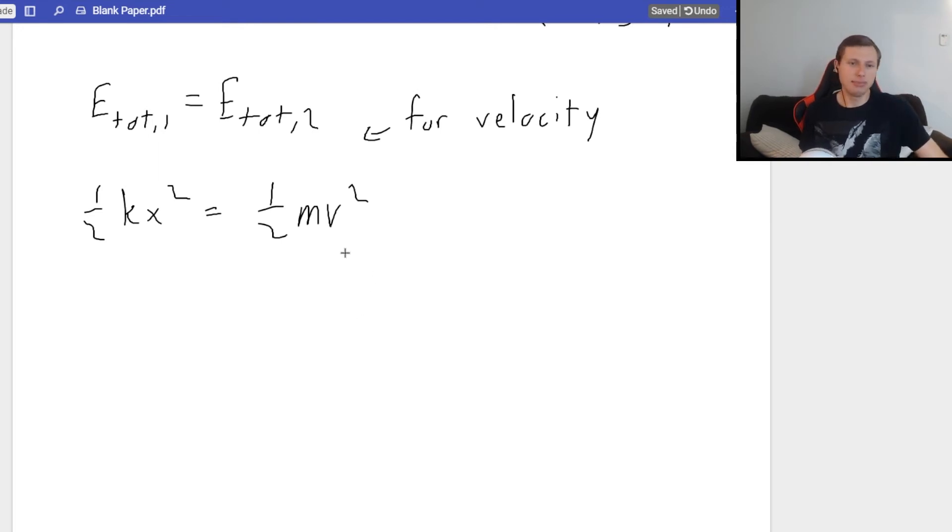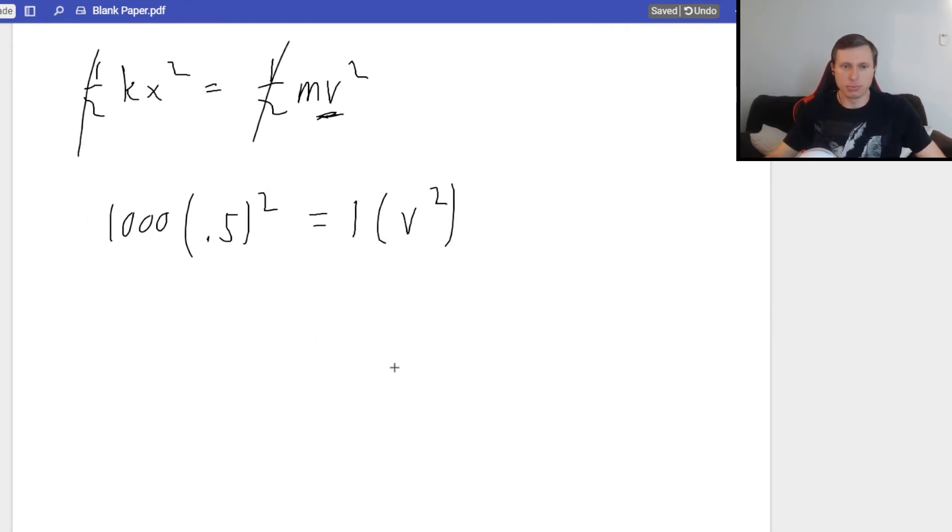So one half KX squared equals one half MV squared. In other words, all the energy at point two is kinetic. So now we need to solve for velocity. And notice here the one halves cancel out, which is nice. And I can just plug in now. So K was 1,000 newtons per meter. K is 1,000. X, we said was 0.5. We need to square that. And that equals mass, which was 1, times velocity squared. So if we plug this in a calculator, the left side is going to become 1,000 times 0.5 squared, which should be 250. So 250 equals V squared. The square root of 250 should be between 15 and 16. So the square root of 250 is 15.8 meters per second. We're done this question.